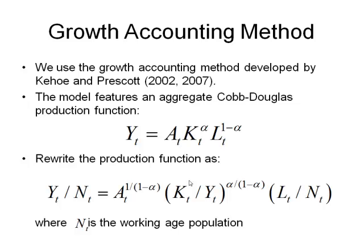So yt over nt is basically output per working age population. At to some power represents productivity. Kt over yt — where kt is capital and yt is GDP — is the capital output ratio.